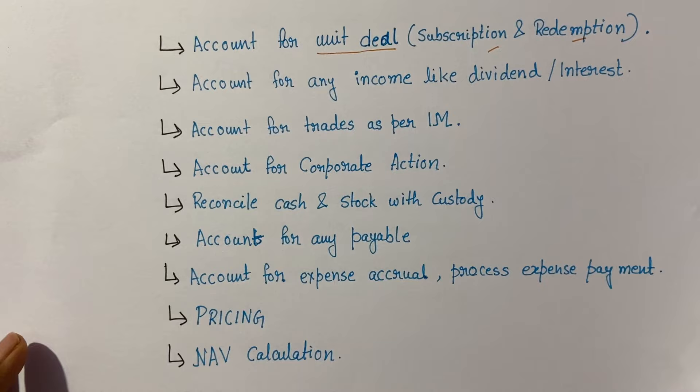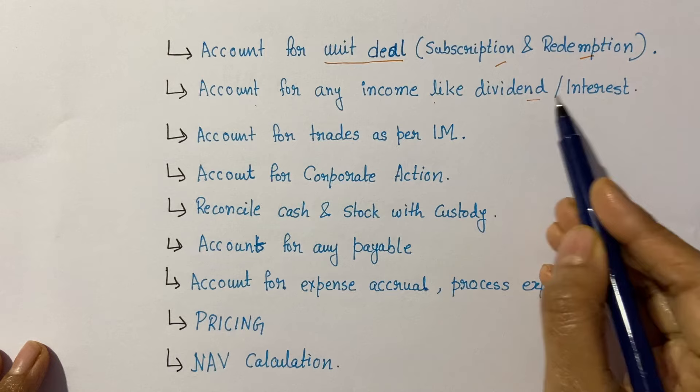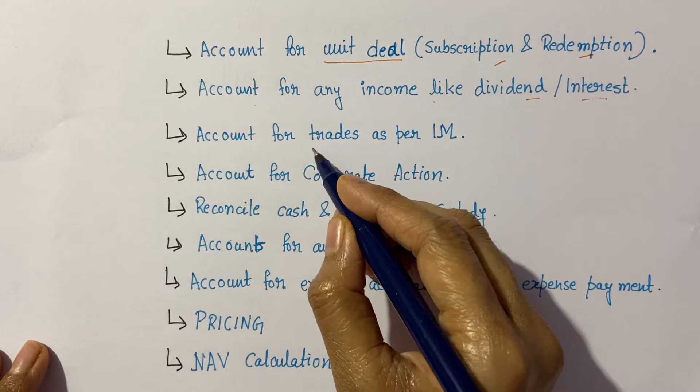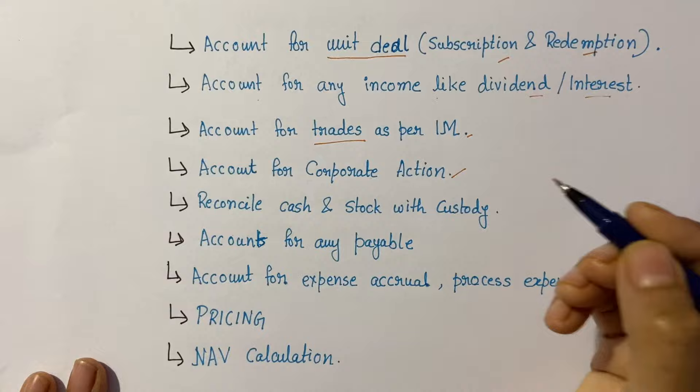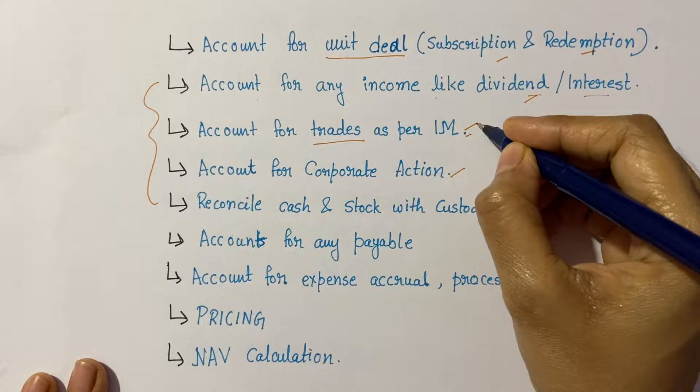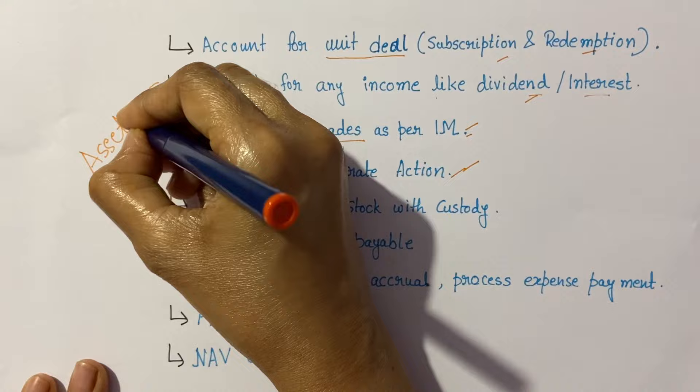Next, the fund accountant needs to account for any income like dividends or interest into the fund. The fund accountant also needs to account for any trades — generally the trade information will be given by the investment manager to the fund. Next, the fund accountant needs to check for any corporate actions. Income, trades, and corporate actions all come under the asset component for the NAV.